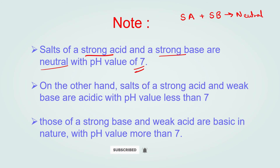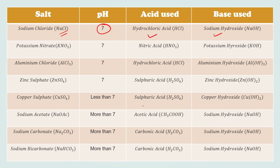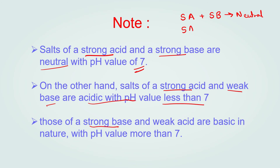On the other hand, salt of a strong acid and a weak base is acidic with a pH value of less than 7. For example, sulfuric acid is a strong acid and copper hydroxide is a weak base. The salt produced, copper sulfate, has a pH less than 7 and is acidic in nature. Strong acid plus weak base gives a salt whose nature is acidic.